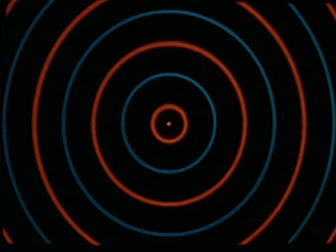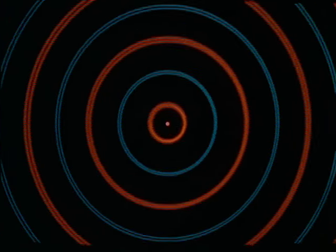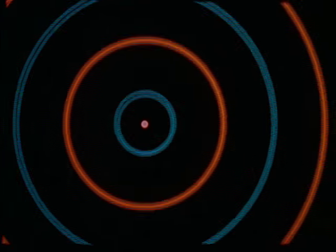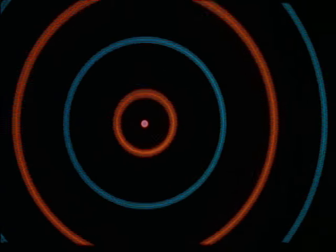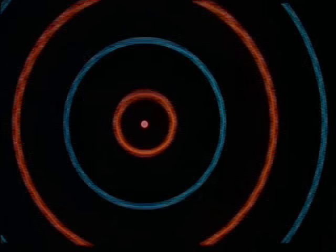To see how this is achieved, let us return to the omnidirectional pattern. Here, red represents the positive peaks, and blue, the negative peaks. The distance between two peaks of opposite polarity is one-half a wavelength.